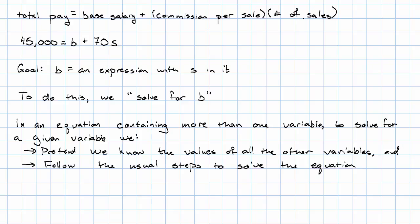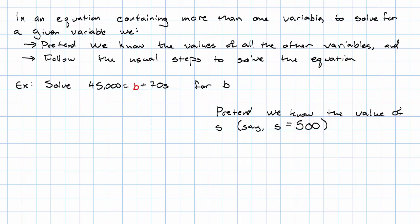So in our example, we want to solve the equation 45000 equals B plus 70S for B. Just so we remember that it's the only real variable there, I'm going to make the B a different color. So this is what we're pretending we're doing. Pretend we know what the value of S is.